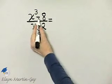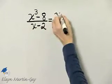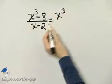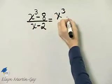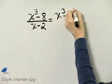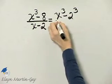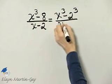In the numerator, we have the difference of cubes. So let's take an intermediate step and write x cubed minus 8 as x cubed minus 2 cubed. Because remember, 2 cubed is 8. And then I'll simply rewrite the denominator.